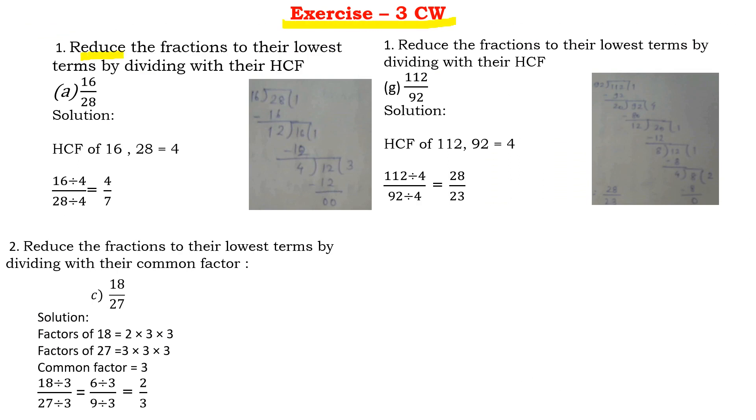So let us see some examples from exercise 3 of your book. Question number 1 says reduce the fractions to their lowest terms by dividing with their HCF. So 16 by 28 I am finding the HCF.